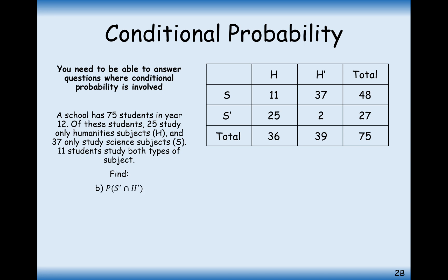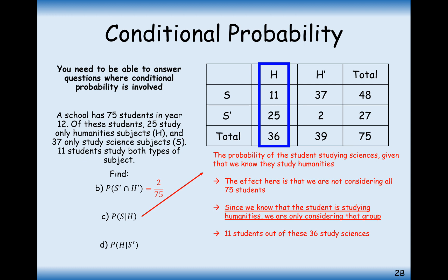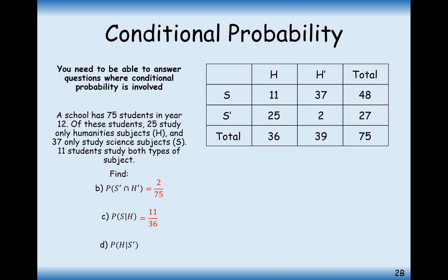Let's work out some probabilities. The probability of not studying science and not studying humanities is 2 out of 75 — those are the two people who don't study either. Next is a conditional probability question: find the probability that someone studies science given that they are a humanities student. We're now only looking at the 36 humanities students, and 11 of them study science. So the answer is 11 out of 36.